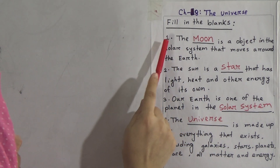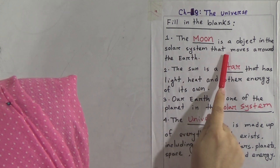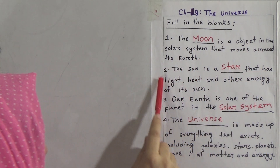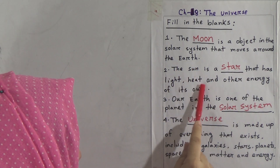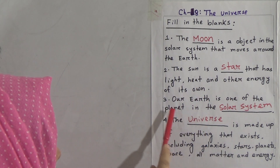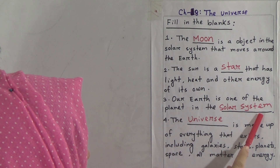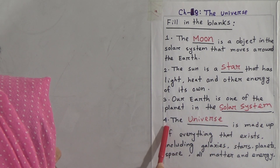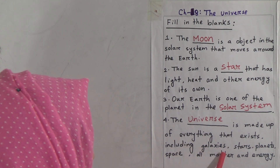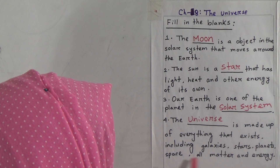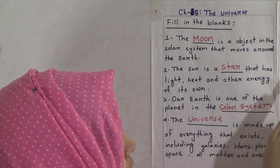I am repeating the fill in the blanks answers. Number one: the moon is an object in the solar system that moves around the earth. Number two: the Sun is a star that has light, heat, and other energy of its own. Number three: our earth is one of the planets in the solar system. Number four: the universe is made up of everything that exists, including galaxies, stars, planets, space, all matter and energy.